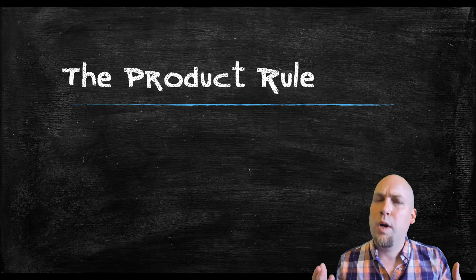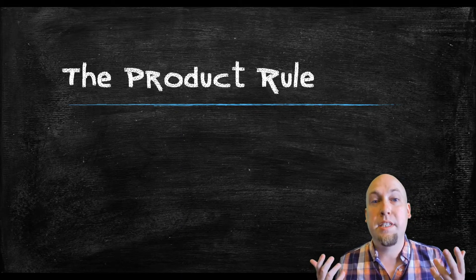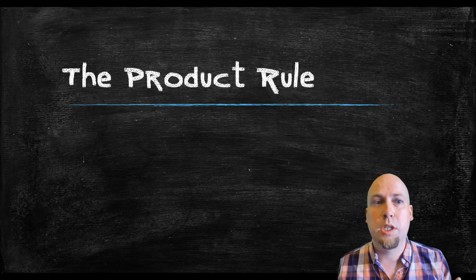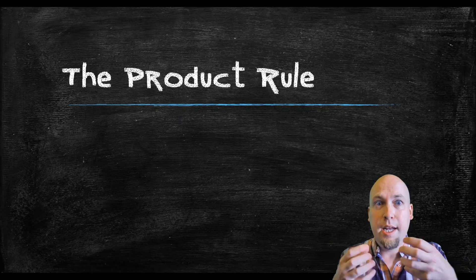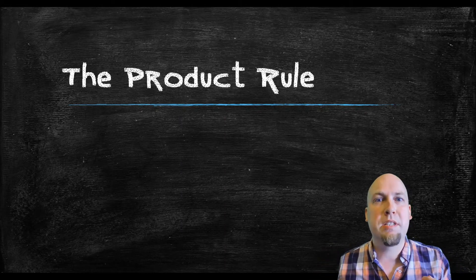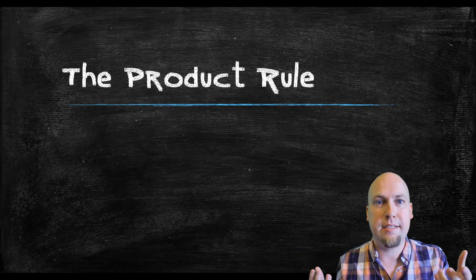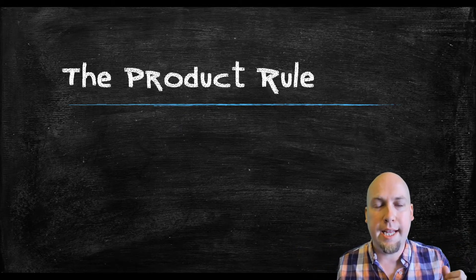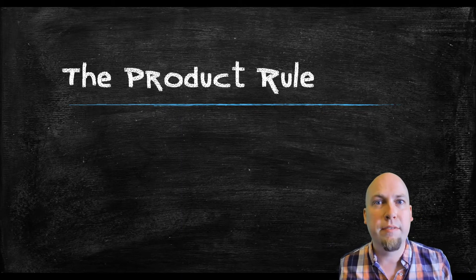But what if the function that you're working with is a little bit more complicated? In particular, the question we're going to look at today is: what if the function is a product of two or more of these simpler types of functions — something like sine of x times e to the x?